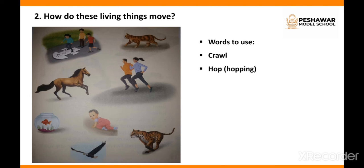In a hopping movement, a person pushes their front leg first and then pulls their back leg. Number three is fly — you can see that birds and eagles fly in the air, so flying is also a type of movement.